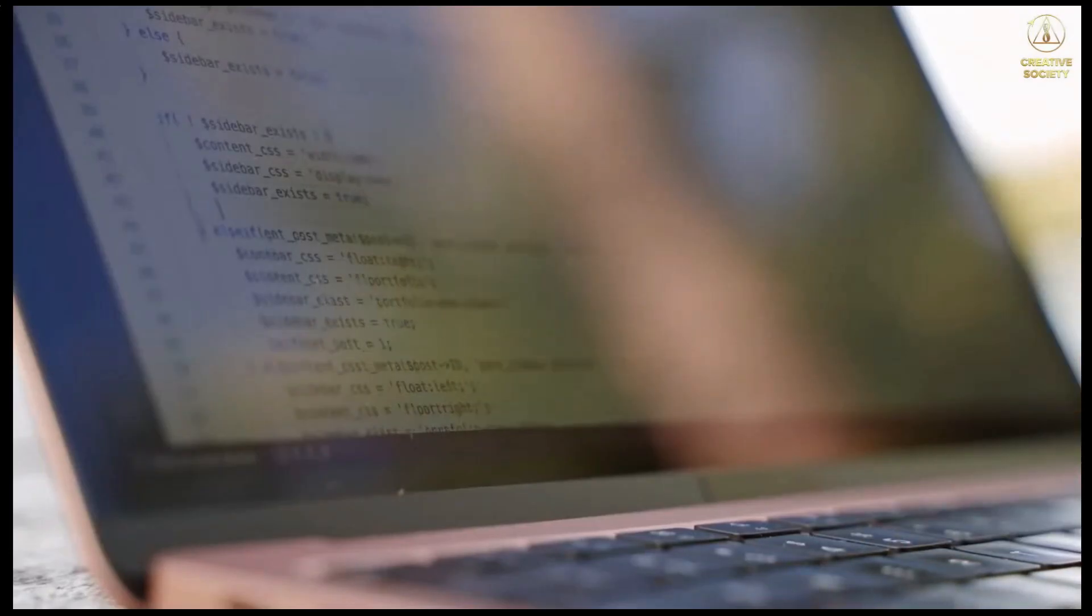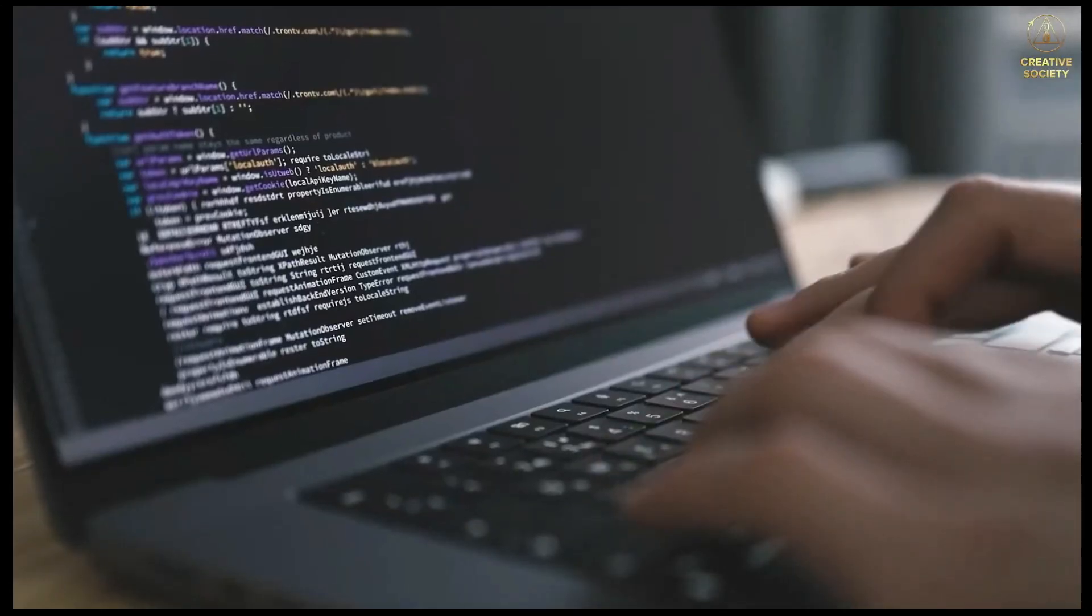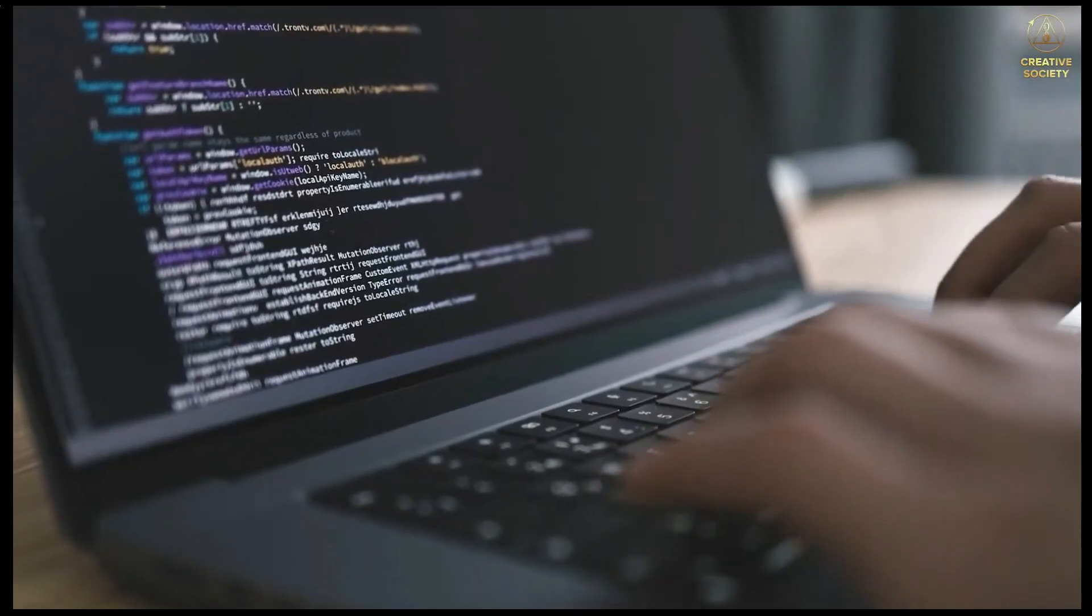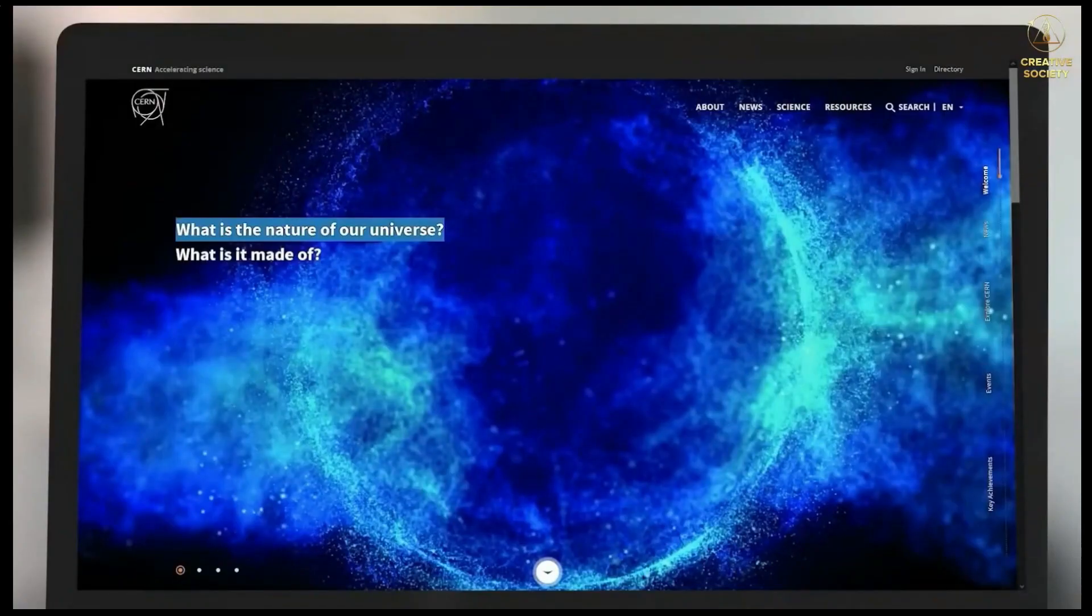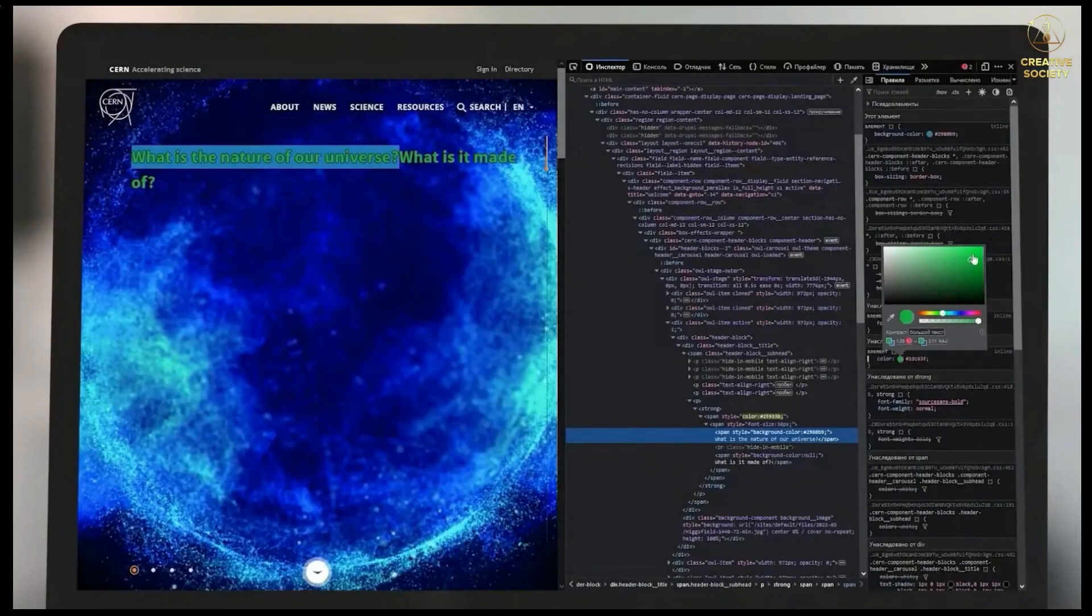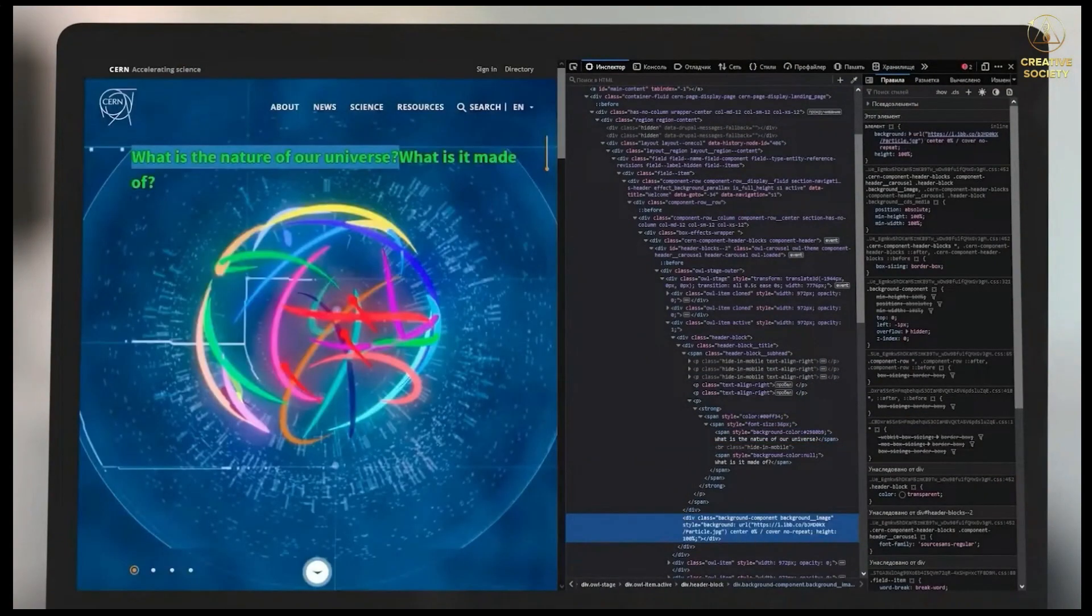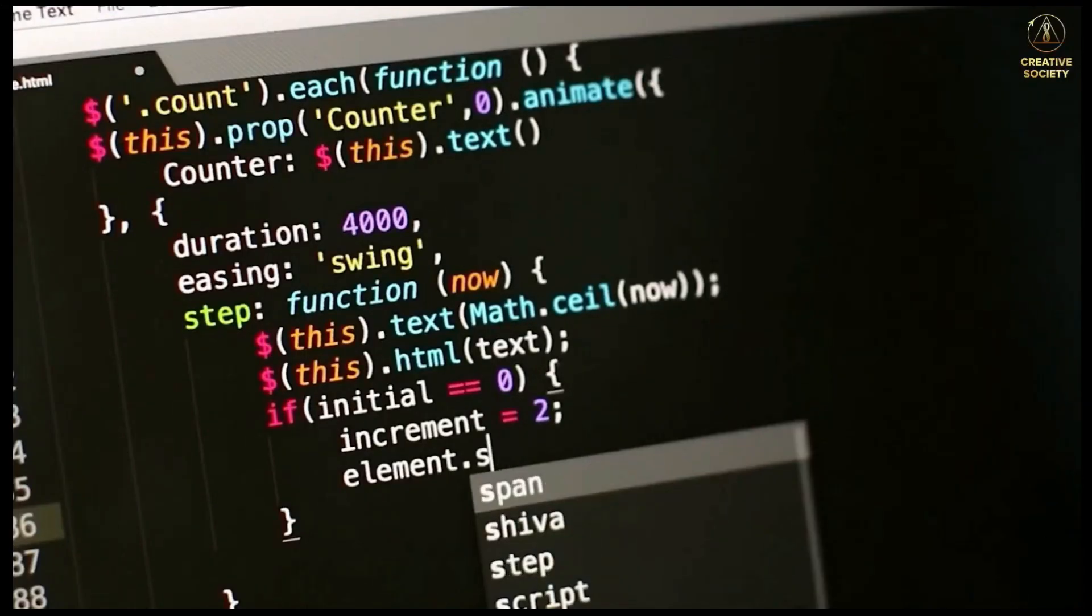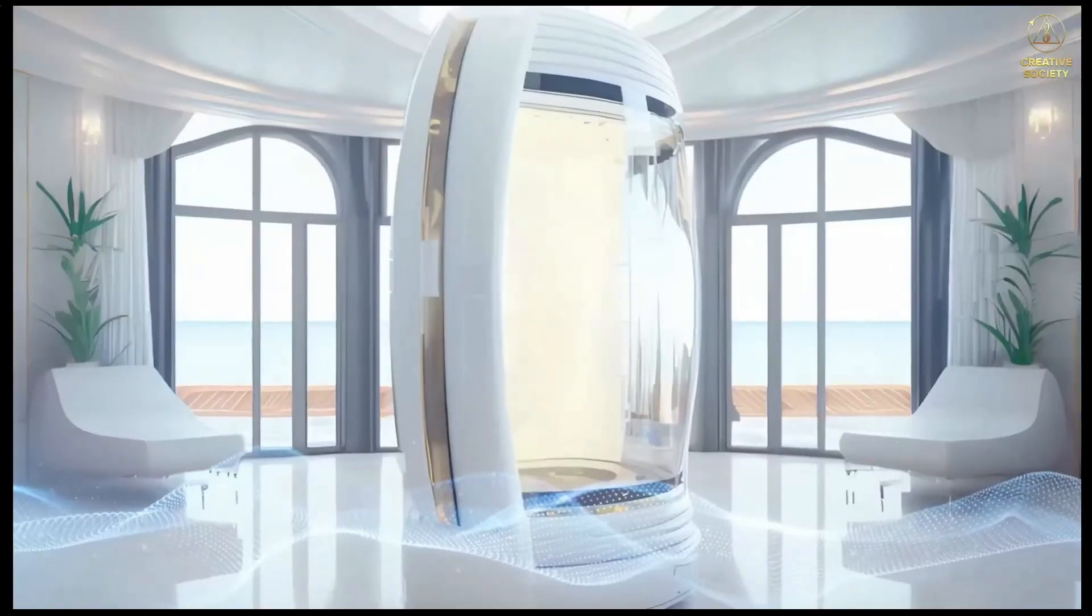Information Code. We can make an analogy with the program code of a website. In order to change something on a webpage, we don't make changes on the website itself, but we go into the code and write what we want. For example, we change the font color in the code, and this is immediately displayed on the website itself. We can write a different picture address, and the picture that we see on the website will be replaced. That is, we make the changes in the code, and they are displayed on the page of the website.